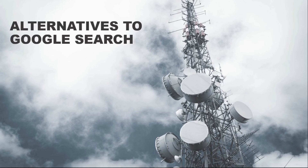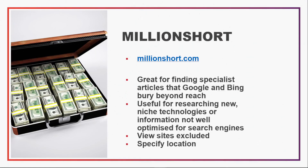Now let's talk about a few alternatives to Google. Whilst Google is probably the most well-known search engine, there are alternatives that do things slightly differently. Million Short is a great way of finding lesser-known items on the internet — as its name suggests, it removes the top one million items from the search results so you can find lesser-known content. You can also change the number of items it removes. This is useful for finding things that are poorly optimised for Google's algorithms or so niche that Google or Bing would never find them.